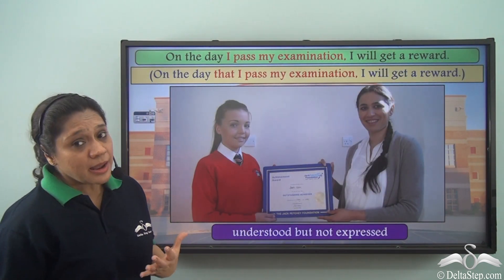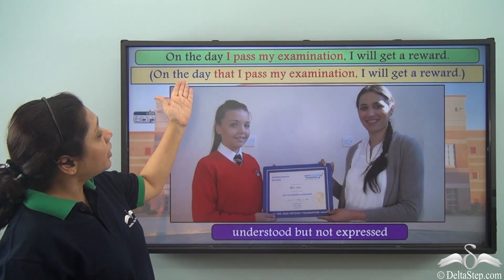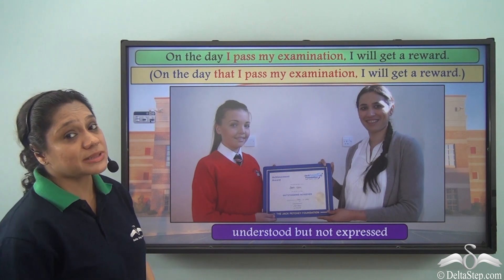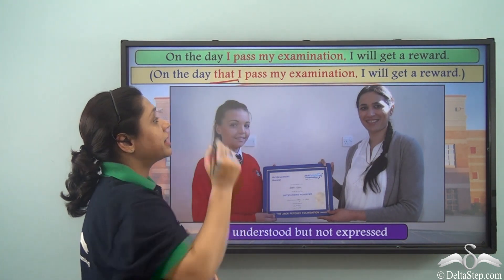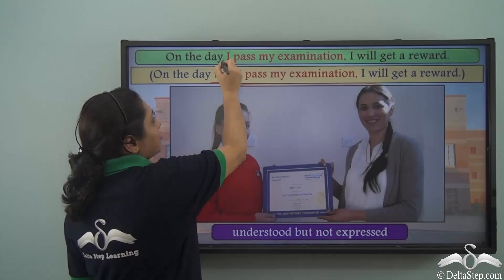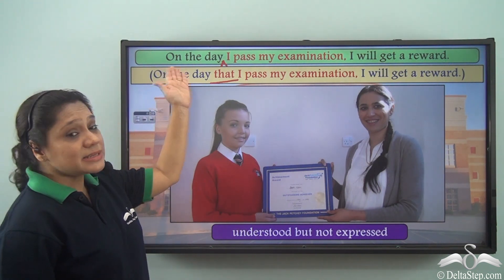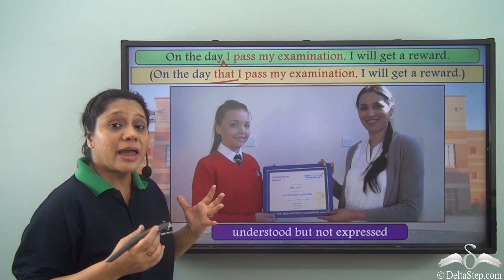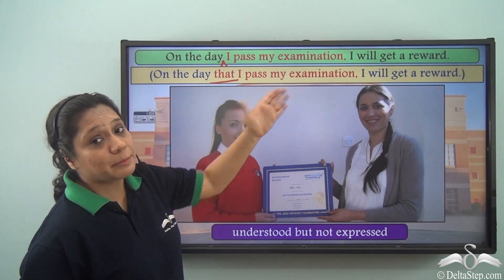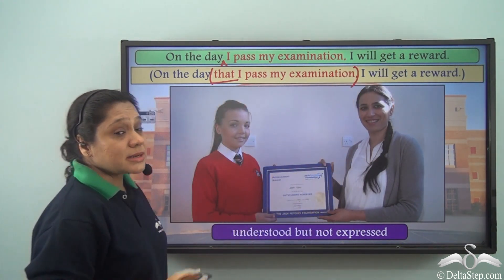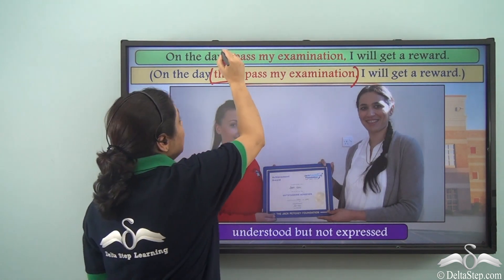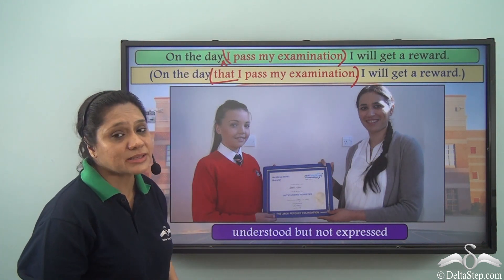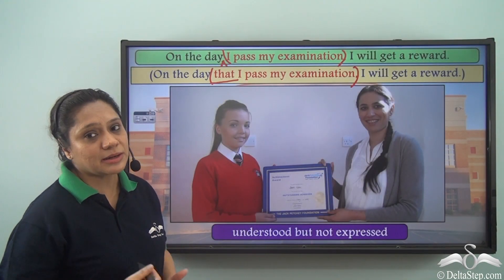Sometimes we may write sentences like this: 'On the day I pass my examination, I will get a reward.' What I mean is: 'On the day that I pass my examination, I will get a reward.' We have omitted 'that' in the first sentence — this is not wrong. In this case, 'that' is understood but not expressed, so 'I pass my examination' functions as the adjective clause. Just because you don't see 'that,' don't get confused — sometimes we can omit it and still write the sentence correctly.